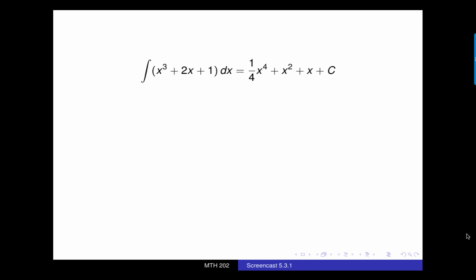Some antiderivatives are straightforward, for example those that involve basic polynomials. The indefinite integral of x cubed plus 2x plus 1 is one-fourth x to the fourth plus x squared plus x plus a constant C.